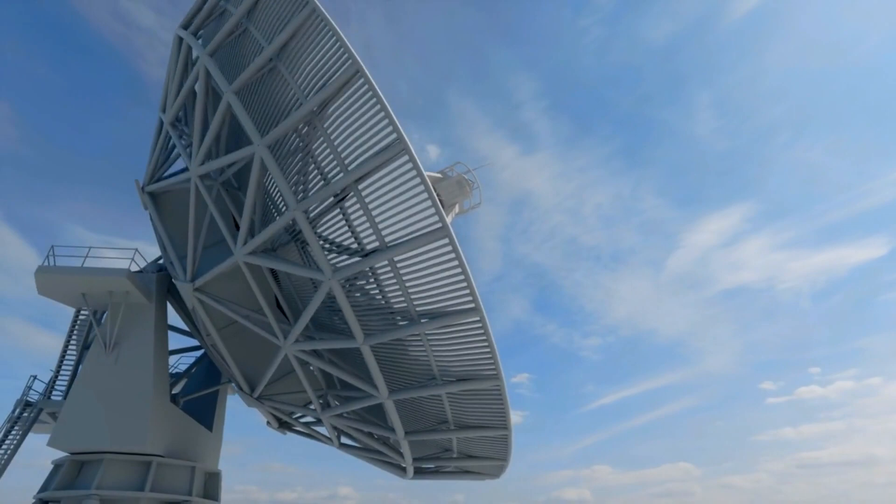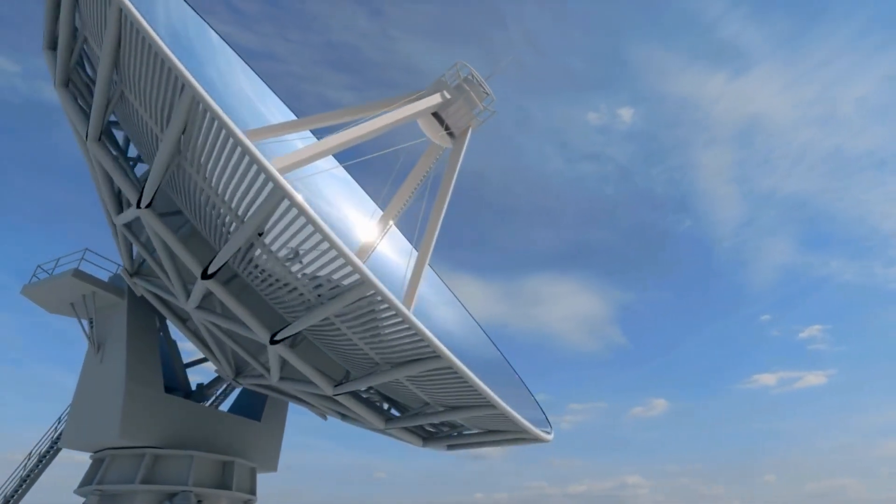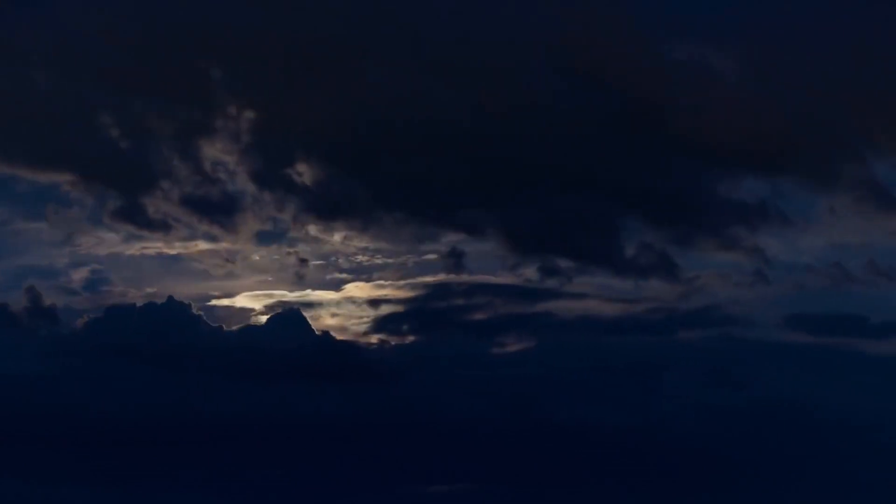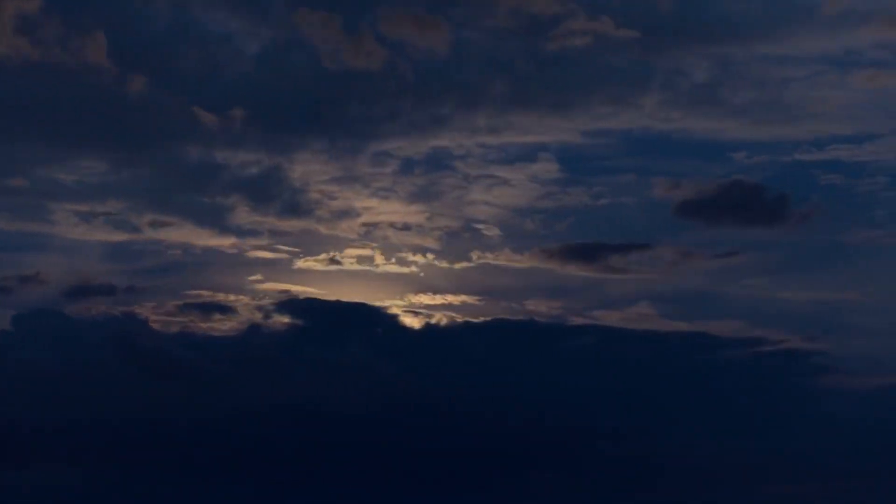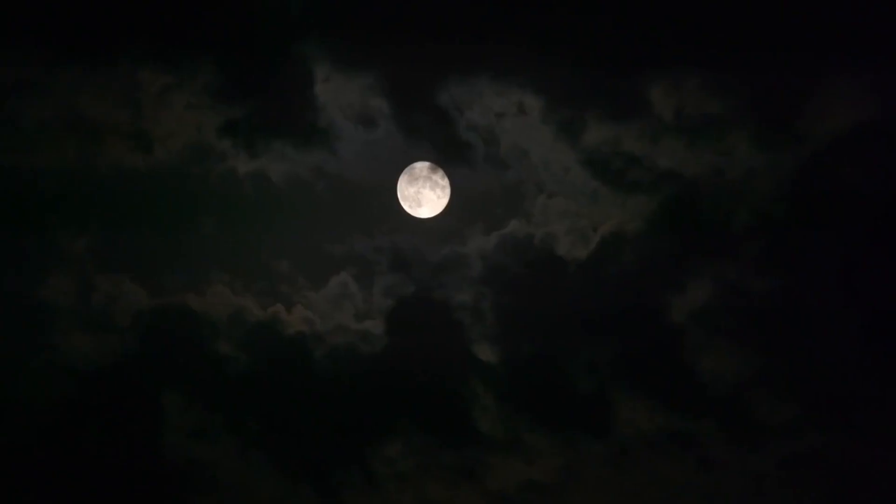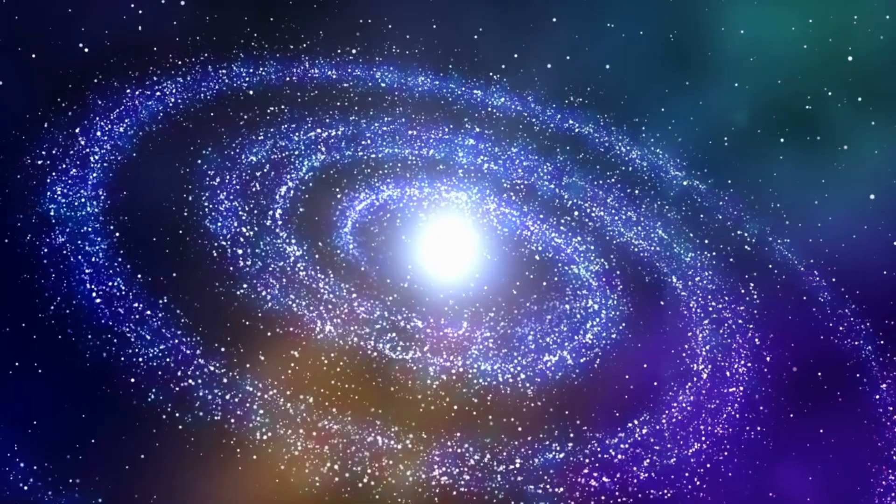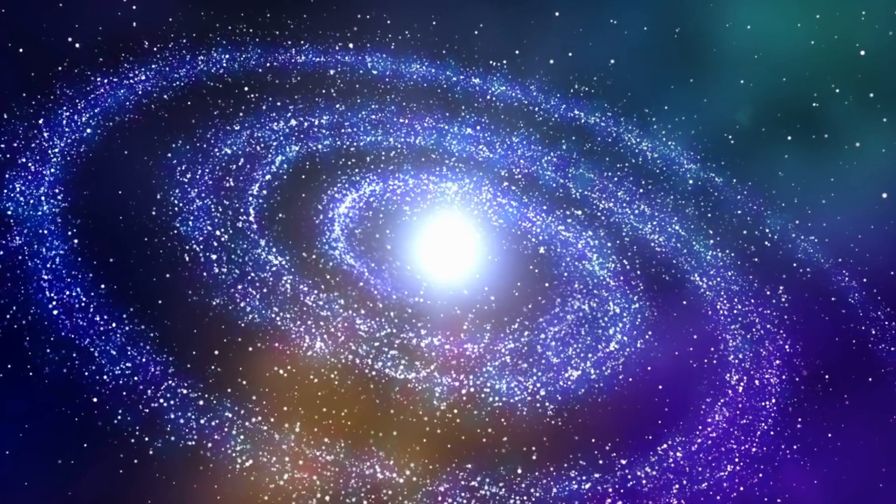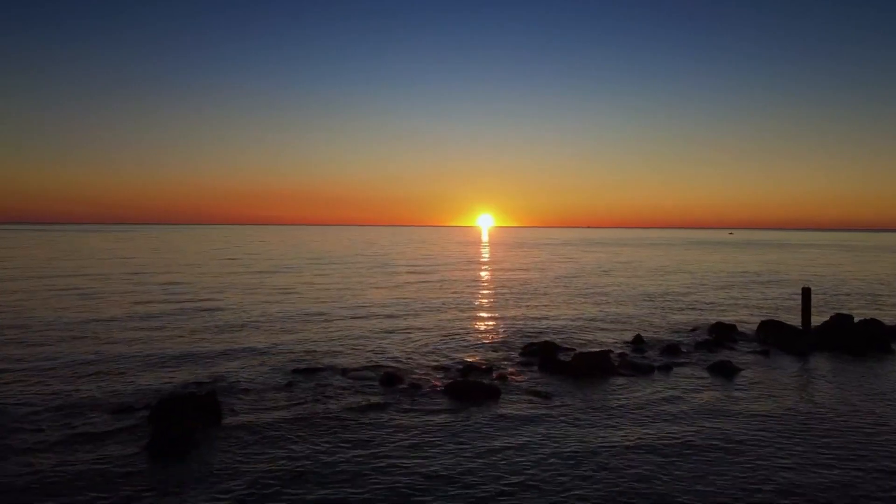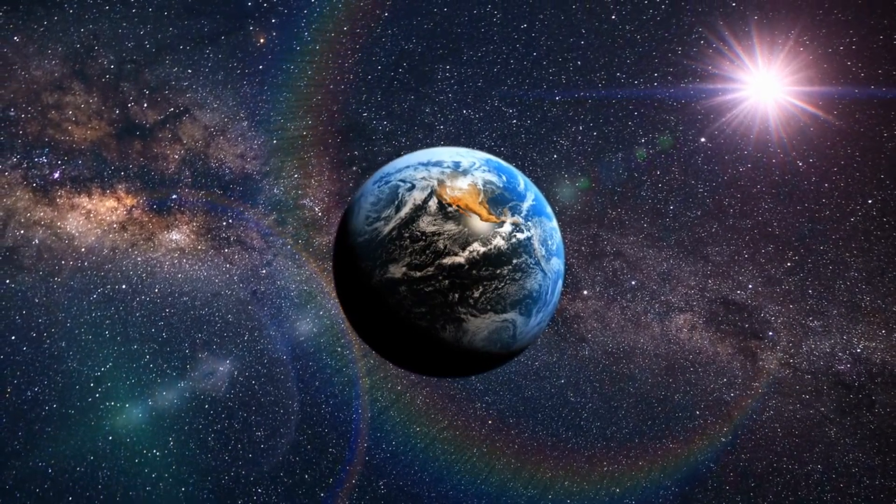But this expansion isn't just a fascinating cosmic phenomenon. It has profound implications for our future observations. As the universe continues to expand, galaxies drift apart. Over time, this drift becomes so significant that galaxies outside our local group will move so far away and so fast that their light will never reach us. Imagine looking up at the night sky in the far future. We'll still see some galaxies, the ones that are part of our local group, but the rest? The distant galaxies we can see now will have moved so far away, their light won't be able to reach us anymore. They'll disappear from our view, like ships sailing beyond the horizon.